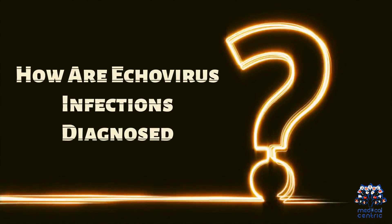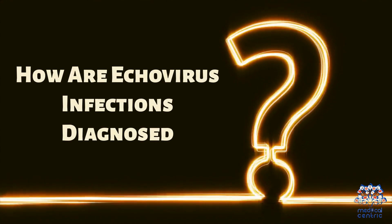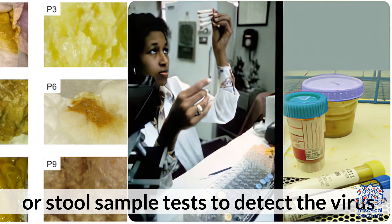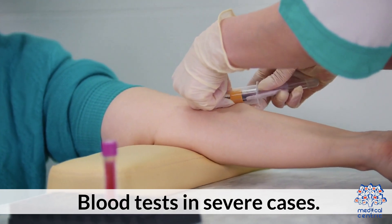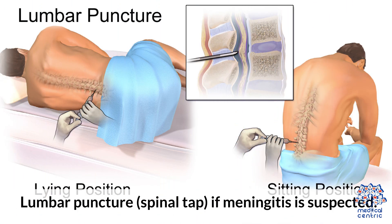How are Echovirus infections diagnosed? Throat swab or stool sample tests to detect the virus; blood tests in severe cases. Lumbar puncture – spinal tap – if meningitis is suspected.